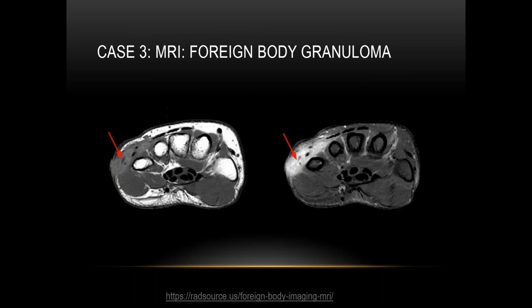This third case illustrates pre- and post-contrast images. You can see the linear low signal intensity foreign body indicated by the red arrows with surrounding enhancement. Without a known history of foreign body, this could be interpreted as a soft tissue mass — so it is important to maintain a high level of suspicion in the extremities for possible foreign body.